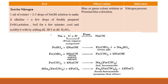Test for nitrogen: take 1 ml of sodium fusion extract, add 2 to 3 drops of sodium hydroxide solution to make it alkaline, then add a few drops of freshly prepared ferrous sulfate solution and boil for a few minutes. Cool and acidify with dilute HCl or sulfuric acid. If Prussian blue color forms, nitrogen is confirmed. The Prussian blue color is due to formation of sodium ferrocyanide — NaOH and ferrous sulfate react with sodium cyanide to produce ferric ferrocyanide, which has a Prussian blue color.